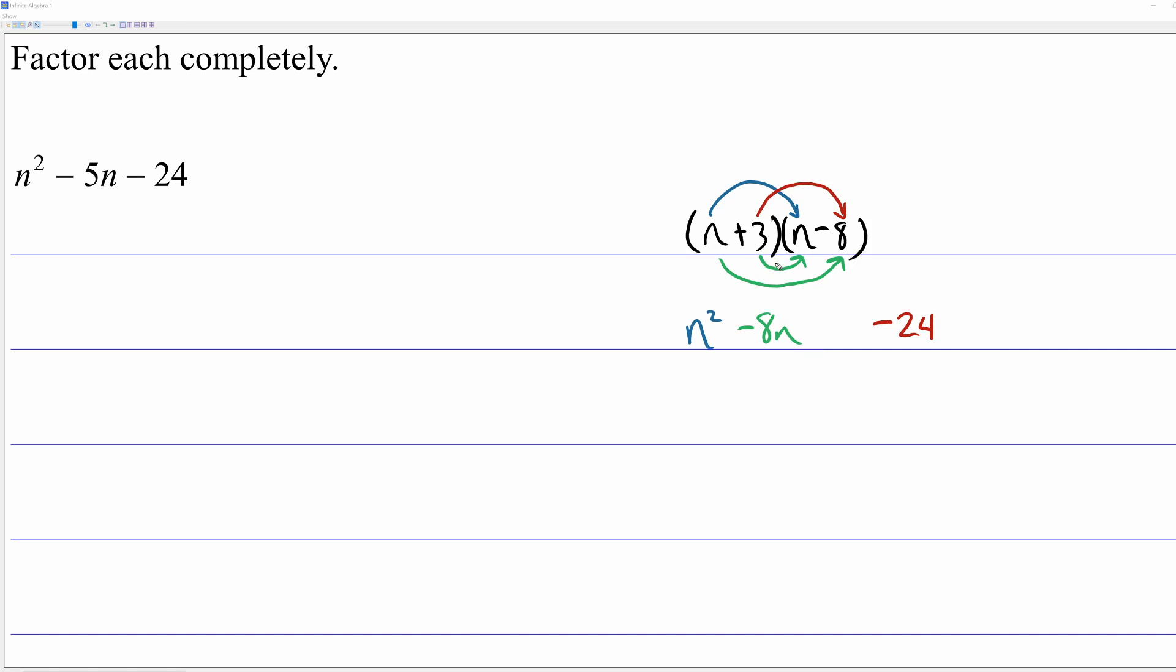And then I call this small arrow the inside two terms. 3 times n is plus 3n. If you combine the two like terms in the middle, negative 8n and positive 3n, we have n squared minus 5n minus 24. And you can see that is where we started. So I did factor this correctly.